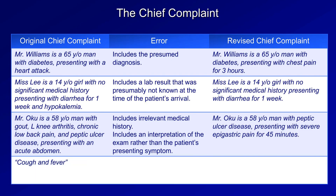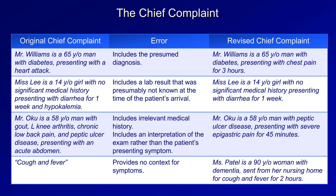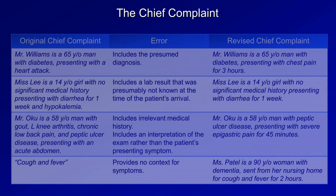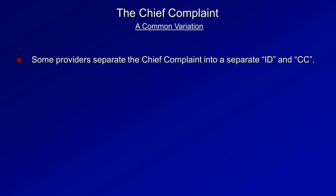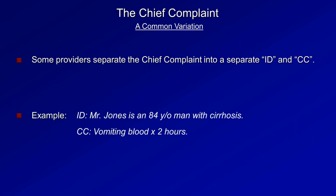A chief complaint of simply 'cough and fever' provides no context — is this a healthy six-month-old or a 50-year-old with AIDS? Better: Ms. Patel is a 90-year-old woman with dementia sent from her nursing home for cough and fever for two hours. The goal is to provide context without giving away the diagnosis prematurely. In the US, some providers separate the chief complaint into ID and CC — for example, ID: Mr. Jones is an 84-year-old man with cirrhosis; CC: vomiting blood for two hours. Personally, I prefer combining them into a single line.